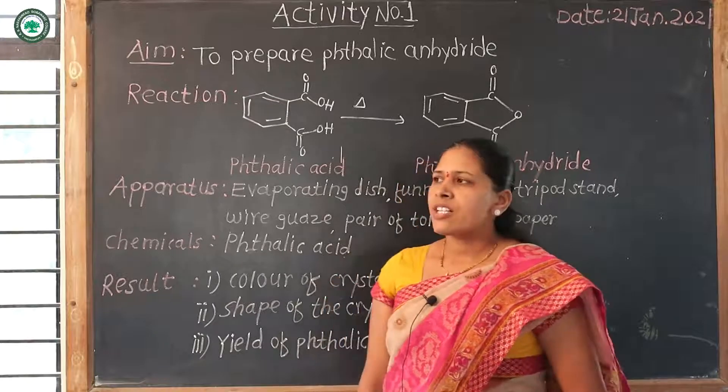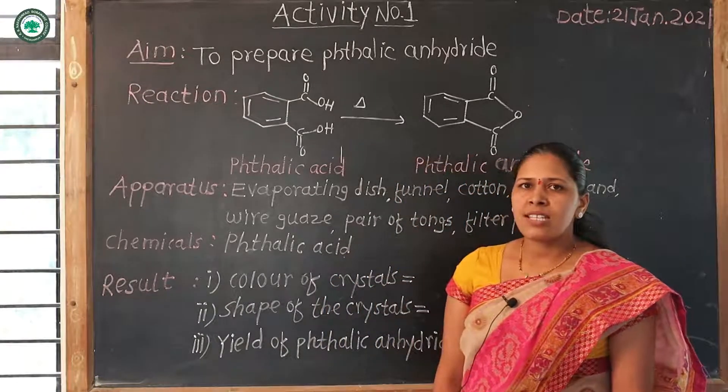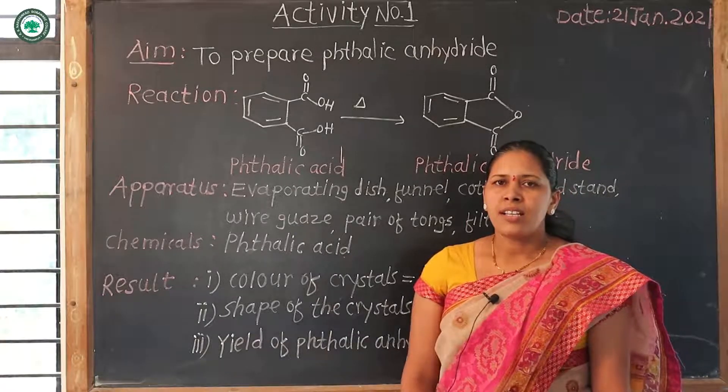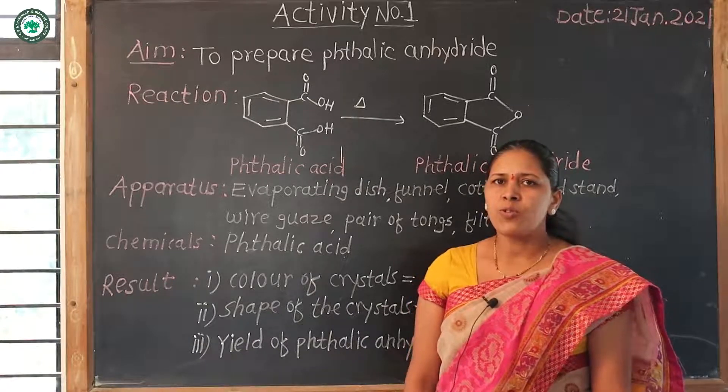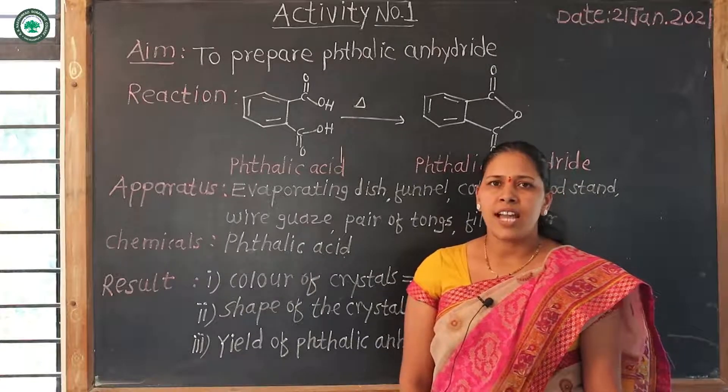Then what is the reaction? Phthalic acid is the dicarboxylic acid, it consists of 2 COOH groups. By heating phthalic acid, here removal of water to form cyclic structure that is phthalic anhydride.